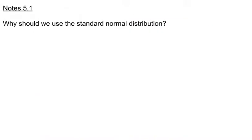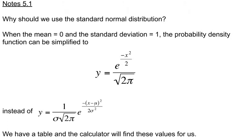The question comes up: why should we use the standard normal distribution when each data set could have its own normal distribution? The reason is that finding probabilities and areas under the curve are not very easy using the general formula. However, we have a table that gives us probabilities of the standard normal distribution, and the calculator will also find standard normal values easily. This is why we use the standard normal distribution so much.